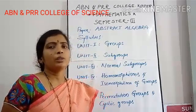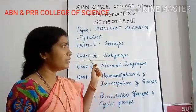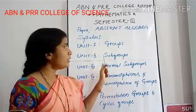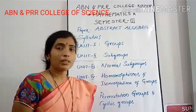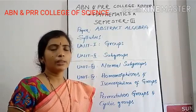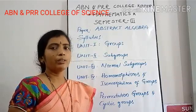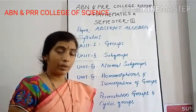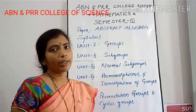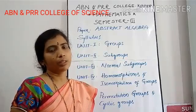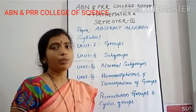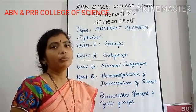Coming to the units, unit 1 is about groups. In this unit, we are going to discuss the basic properties and later, what is groupoid, what is semigroup, what is monoid and groups and commutative groups and their proper examples and relative theorems.